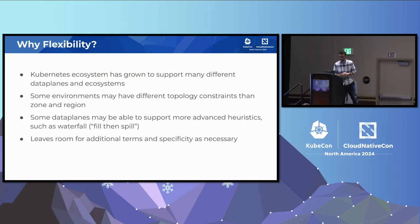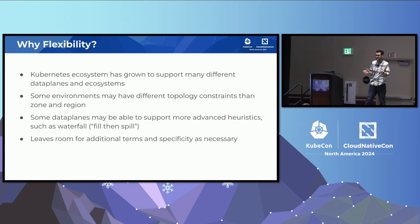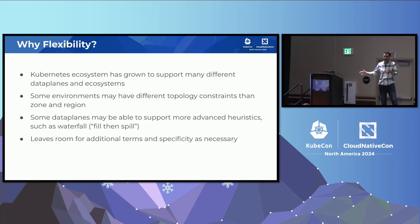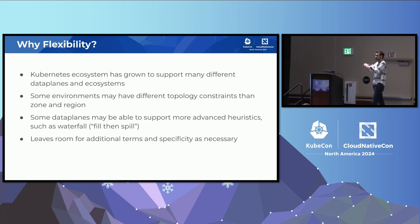We've left room for flexibility in the definition. There are lots of data planes in the Kubernetes ecosystem — some may have different ways to do this. Anything on the service API has a much broader reach than just service itself. We're really just trying to provide a way to communicate a preference, and then the underlying implementation may have better ways to handle it. Some data planes may be able to support a waterfall approach — fill the closest endpoints, then spill over to other zones.